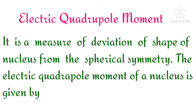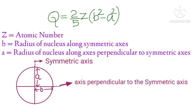Let's look at the equation. The electric quadrupole moment Q equals (2/5) times Z times (b squared minus a squared). Here, Z is the atomic number, b is the radius of the nucleus along the symmetric axis, and a is the radius of the nucleus perpendicular to the symmetric axis.